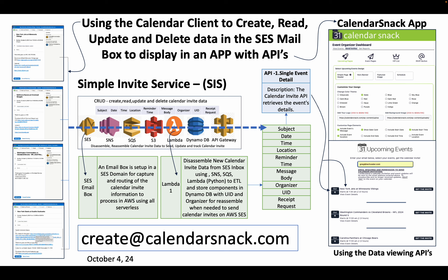Back to the email box: SES routes and stores working in conjunction with S3. SQS and SNS handle routing, messaging, and queuing to make sure the Lambda picks up the data set and shuffles it to the Lambda, then it's laid down into DynamoDB on inserts. Particularly, we're taking a scalpel to subject, date, time, location, reminder time, message body, organizer, UID, and receipt request — all laid down in DynamoDB.